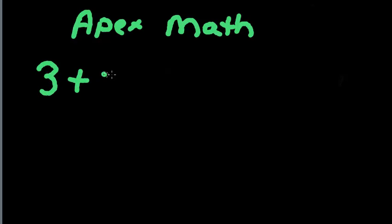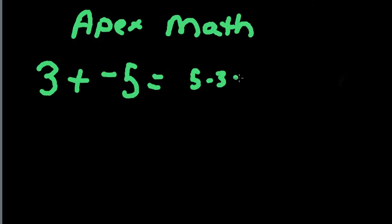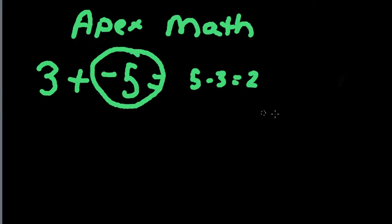if we have 3 plus a negative 5, you've already learned how to solve this type of problem. Just to review, we look at which one of these two numbers is bigger without the sign. The 5 is the bigger number, so since they're opposite signs, we're going to subtract the two numbers. So we're going to do 5 minus 3, which is equal to 2, and we're going to take the sign of the bigger number. Since the bigger number is 5, we take the sign the 5 had, which was a negative, so the answer would be negative 2.